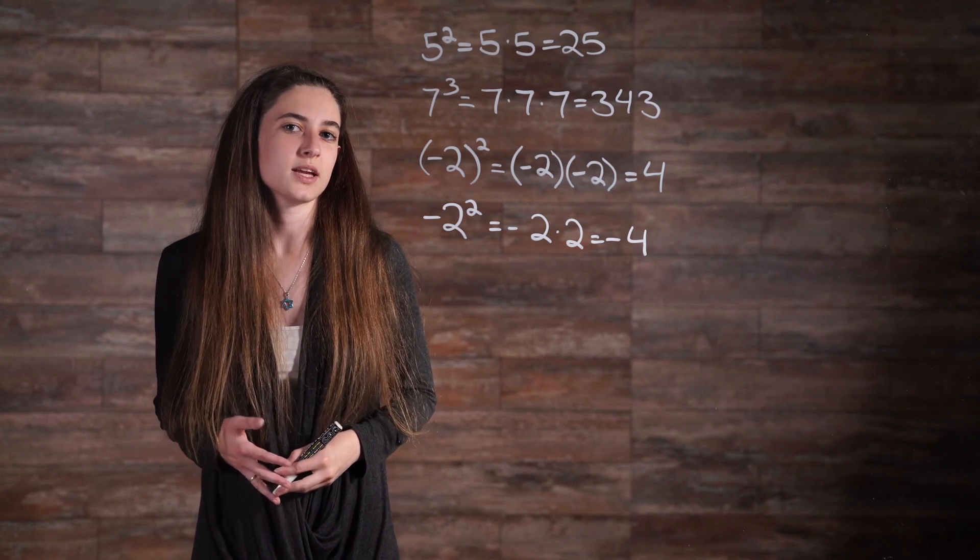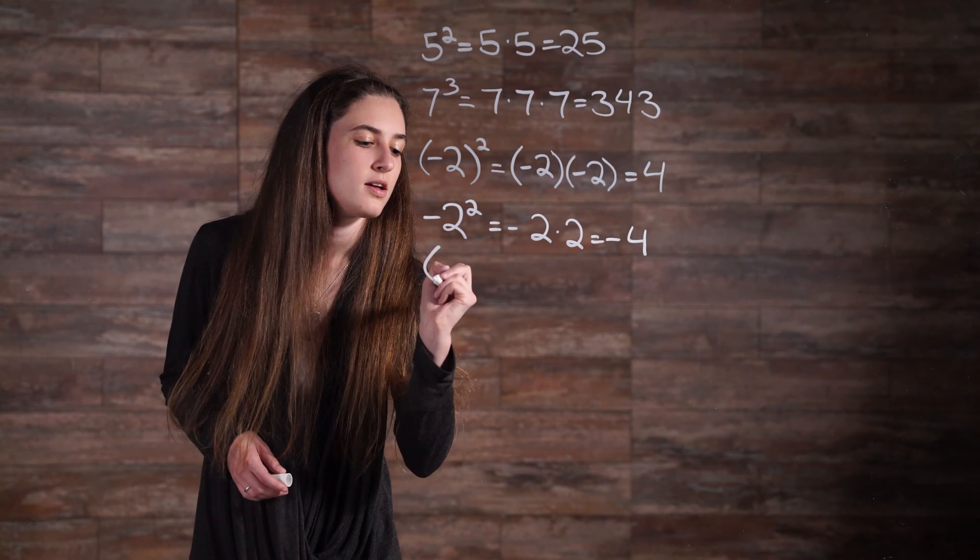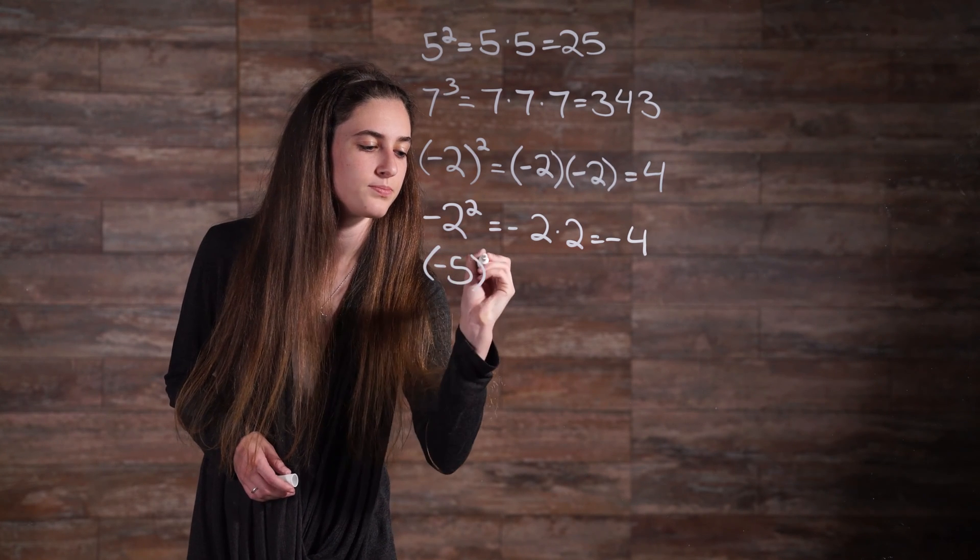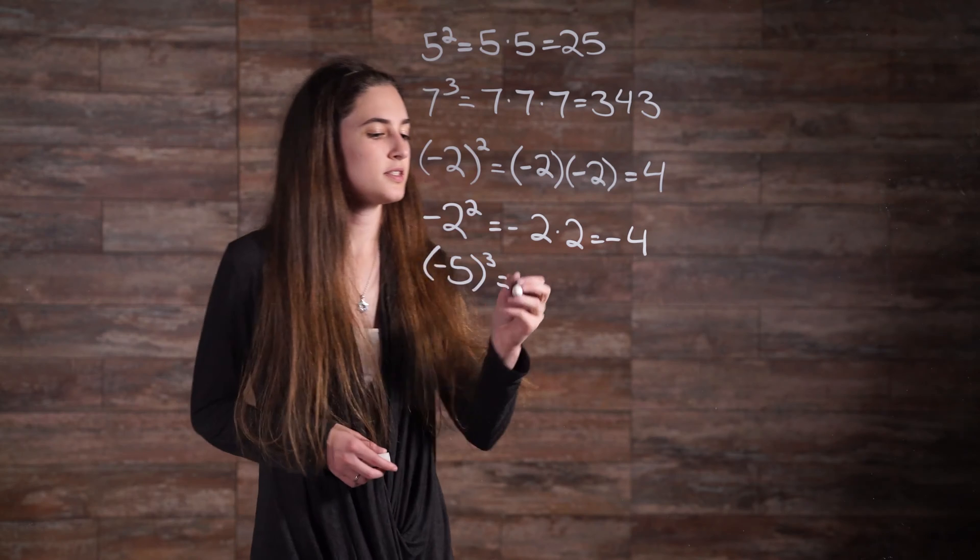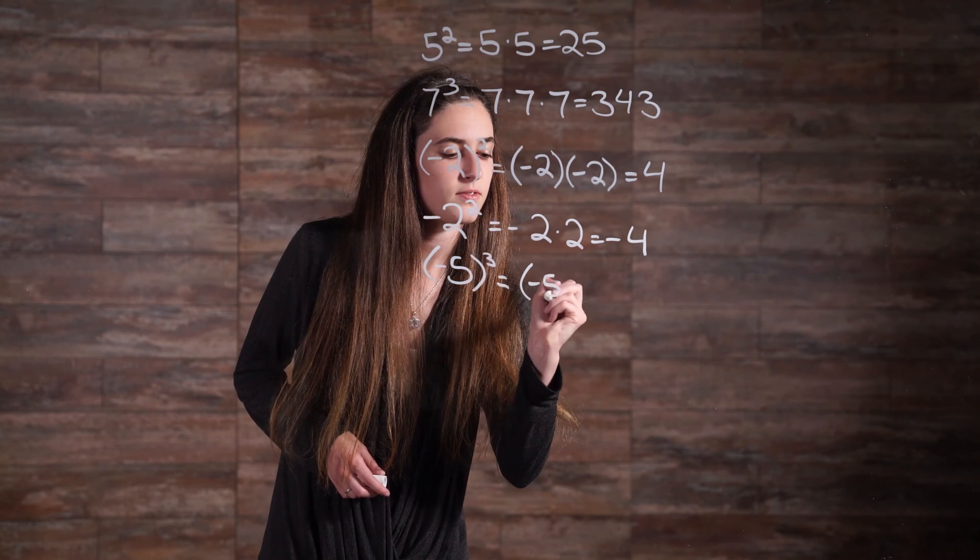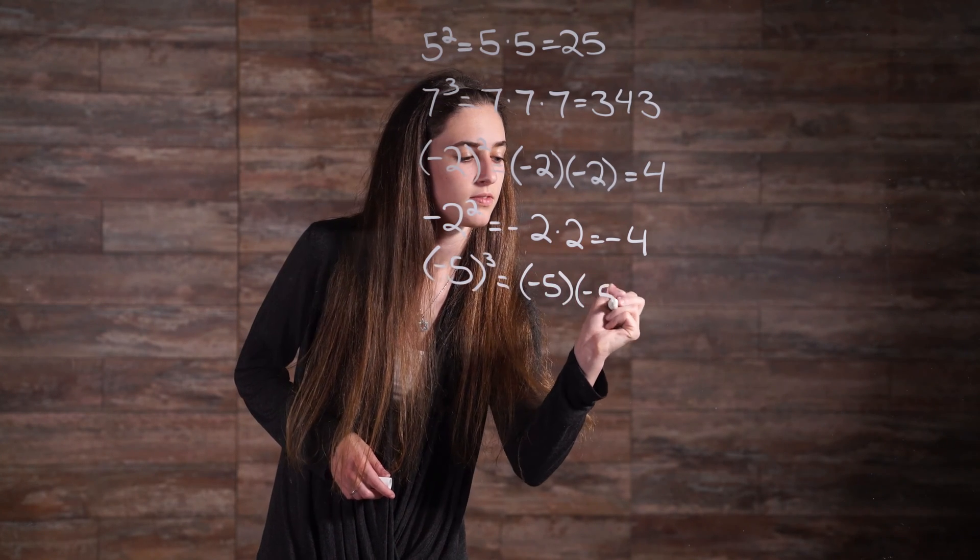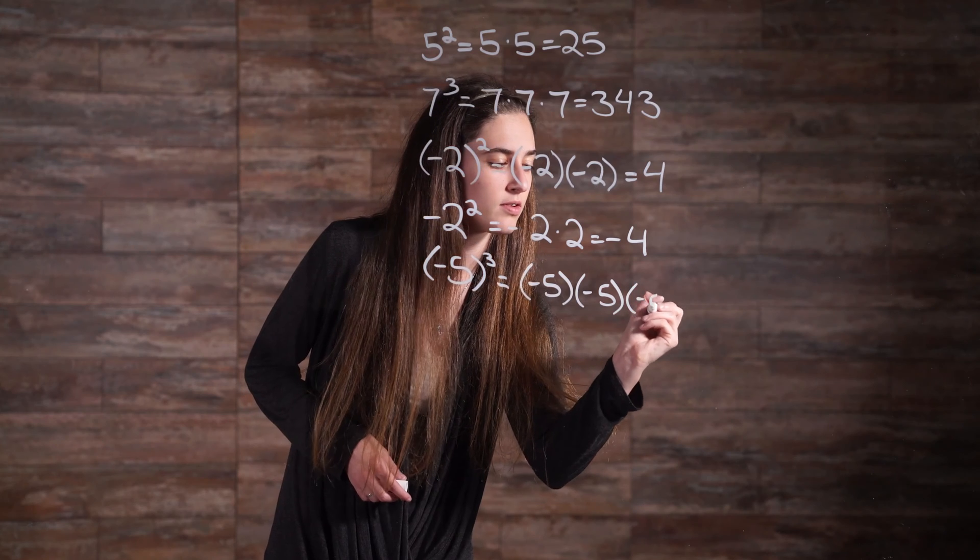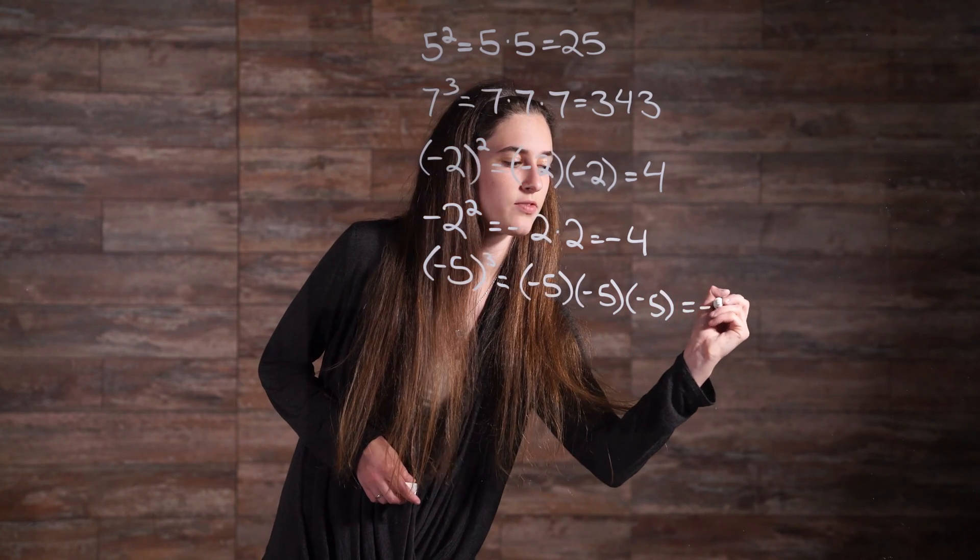Let's try another one with negatives. Negative 5 cubed. This is equal to negative 5 times negative 5 times negative 5, which gives you negative 125.